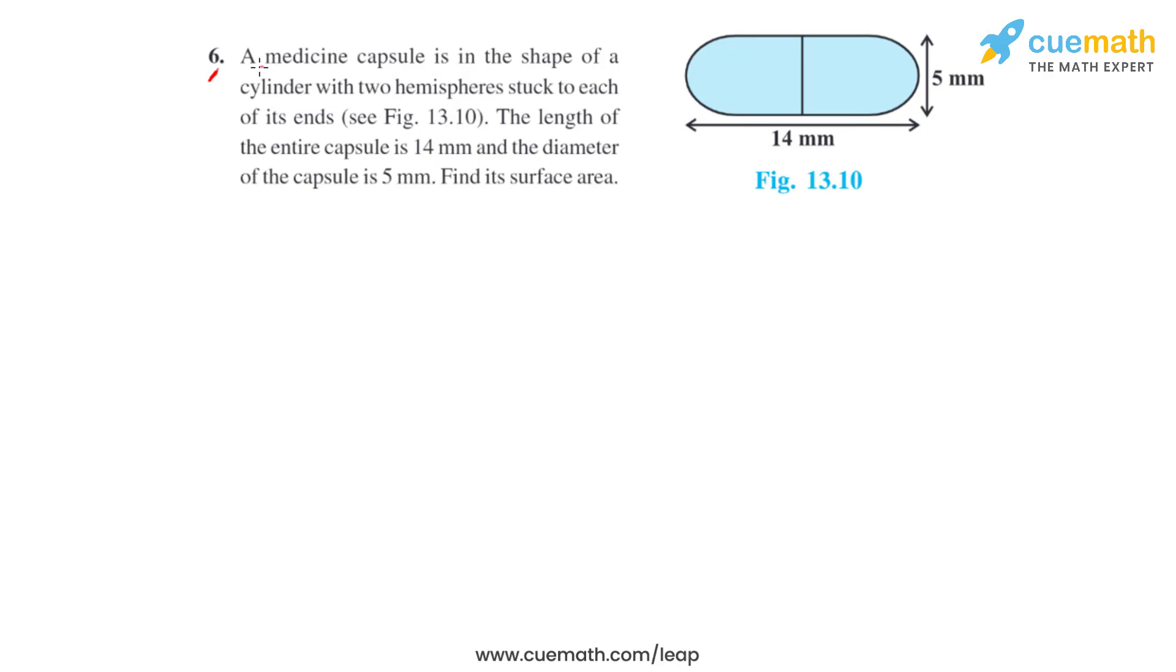Question number 6 says that a medicine capsule is in the shape of a cylinder with two hemispheres stuck to each of its ends, as given in figure 13.10. The length of the entire capsule is 14 mm and the diameter of the capsule is 5 mm. We have to find the surface area of the capsule.